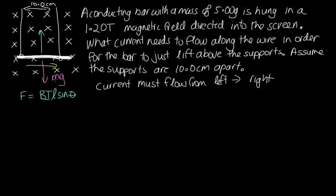In order for it to just lift above, we said the magnitude of these two things must be the same. So we've got mg is equal to BIL sine theta. And we're trying to calculate I. So I is equal to mg over BIL sine theta.